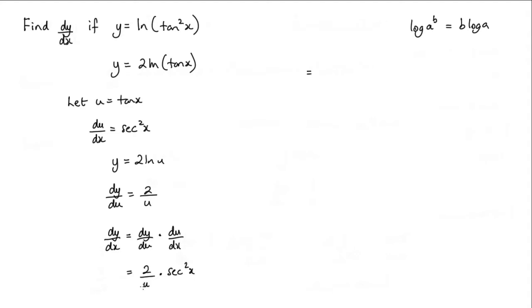Now 2 over u, well u is tan x. So I can substitute back in again for u being tan x. So we're going to get 2 sec squared x over tan x.